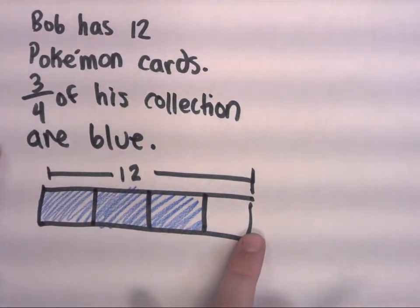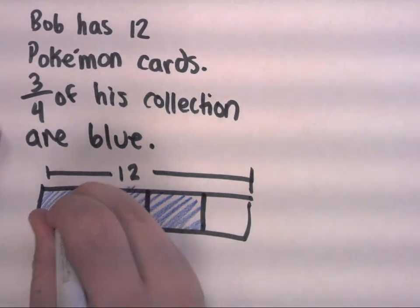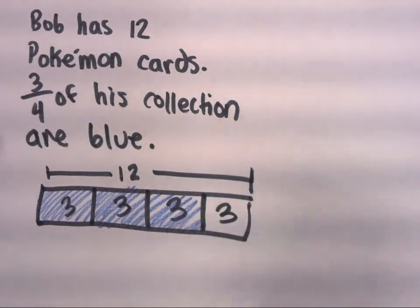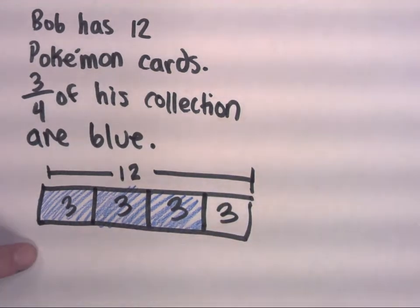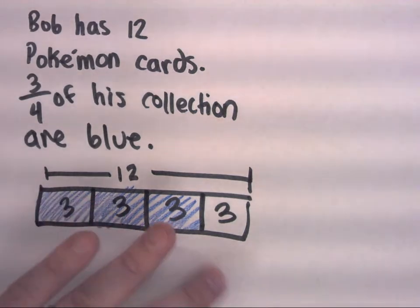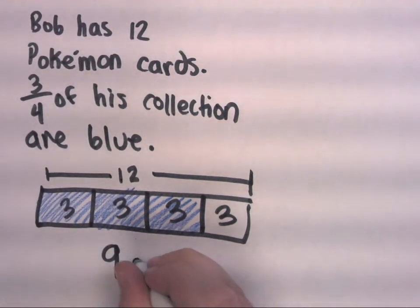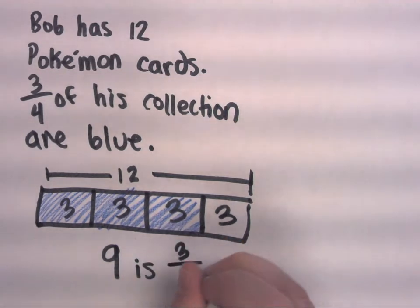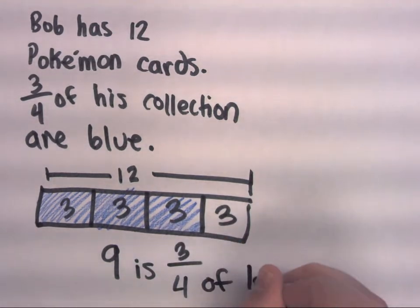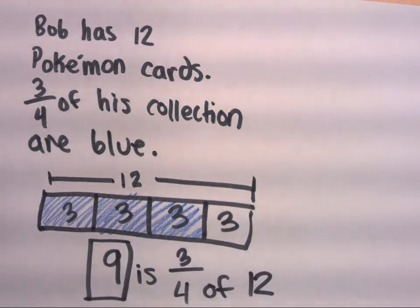4 equal spaces. So 12 divided by 4 is 3, meaning that the value of each of these fourths is 3. If I have 3 out of the 4, 3 plus 3 plus 3 gives me 9. So 9 is 3/4 of 12. And so Bob has 9 Pokemon cards that are blue out of his 12 Pokemon card collection.